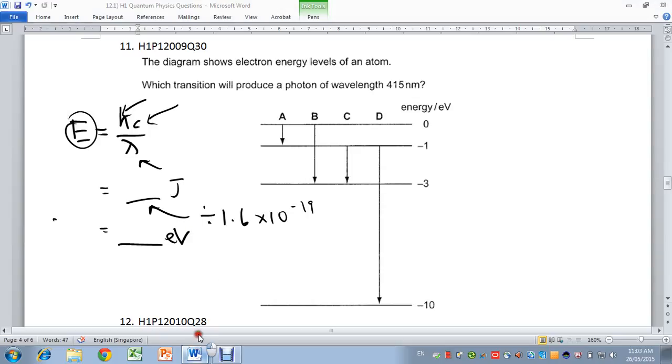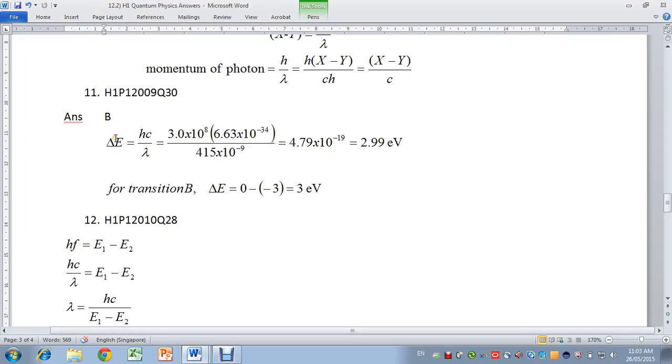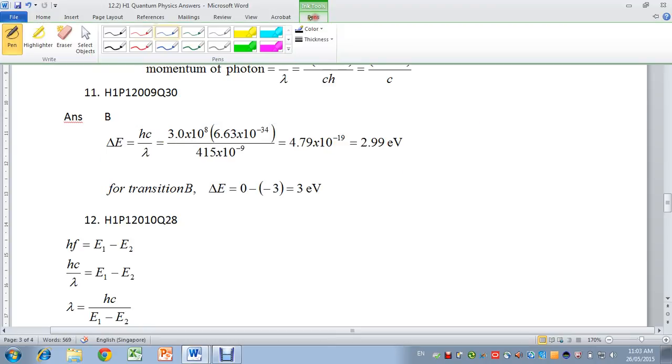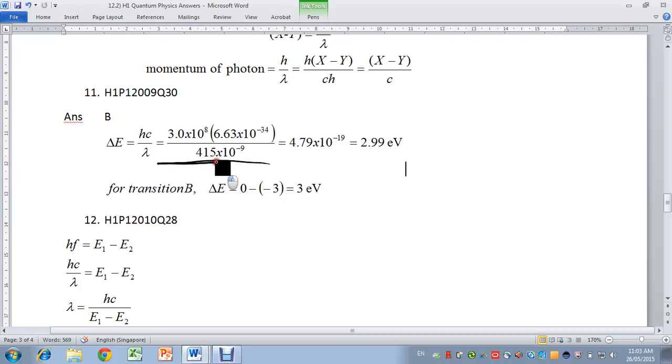So let's look at the specific calculation. Using E equals hc over lambda, we substitute in the values here. We get 4.97 times 10 to the power of minus 19 joules. If we divide this by 1.6 times 10 to the power of minus 19, we get 2.99 eV. 2.99 eV strongly suggests the transition is from 0 to the negative 3 eV energy level. So the answer is B.